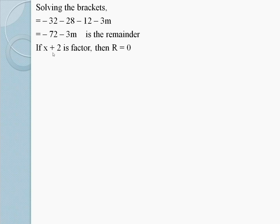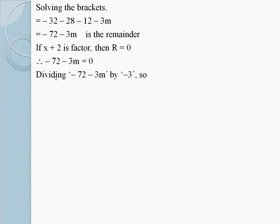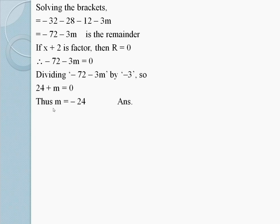If x + 2 is a factor, then r = 0. Therefore -72 - 3m = 0. Dividing by -3: 24 + m = 0. Thus m = -24 is the required answer.